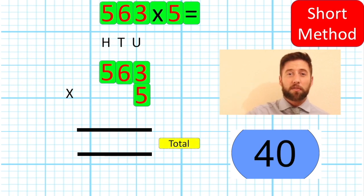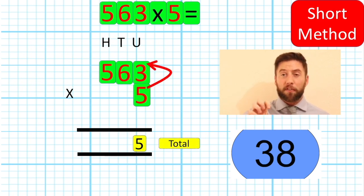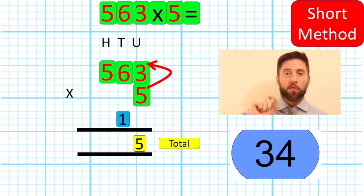First question 5 times 3. 5 times 3 is 15. So I've got my unit of a 5 but I've not yet done my 10s question. So I'm going to bring this into my spare row. Ready to add it on in a moment.